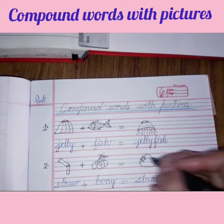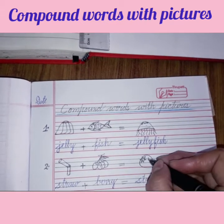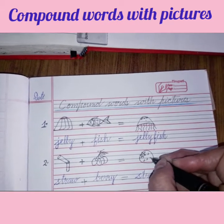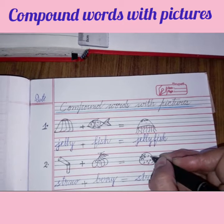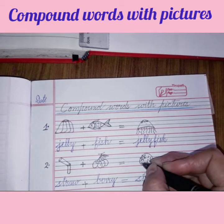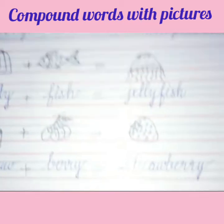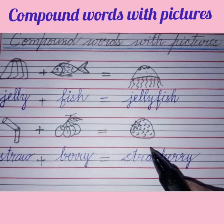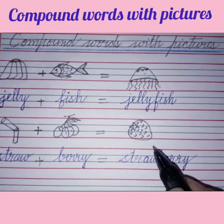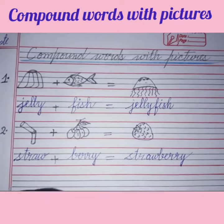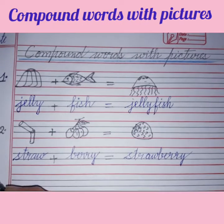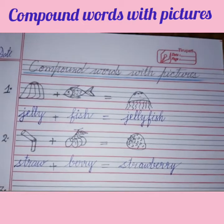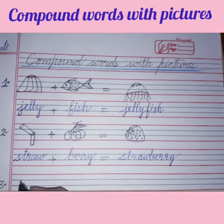Strawberry: S-T-R-A-W-B-E-R-R-Y. Draw a strawberry — make a little curvy triangle, make a star shape on top, and add small V shapes inside. This is a strawberry.